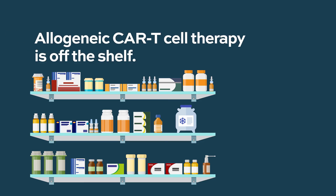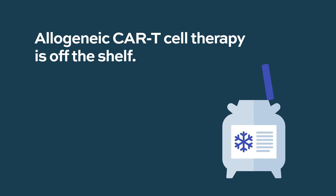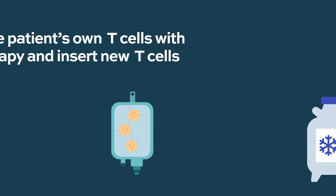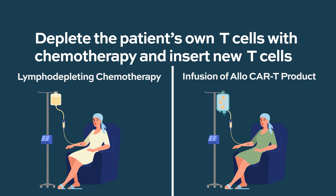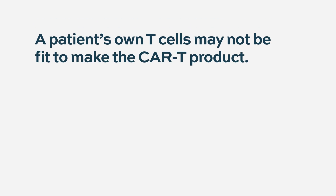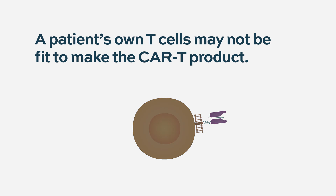Allogeneic T cells — one of the benefits is that they're off the shelf, meaning we can literally get them off the shelf, ready and already trained. We can deplete the patient's original T cells with chemotherapy and then give the new T cells and hope they do their job. Another benefit is that with all the chemotherapy myeloma patients go through, there's speculation that a patient's T cells might not be fit enough to fight multiple myeloma. Getting new, fresh allogeneic T cells could be very helpful.